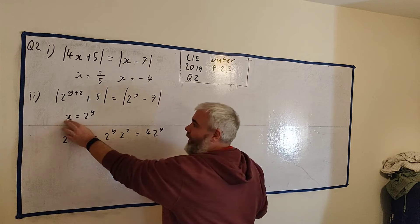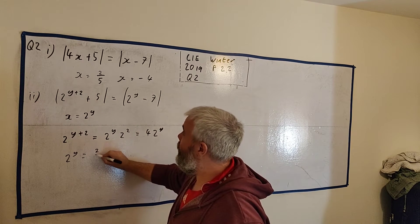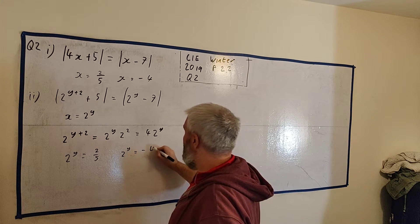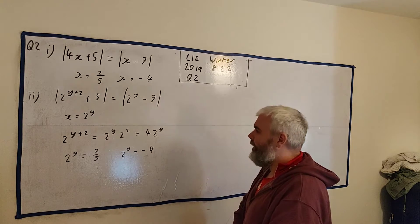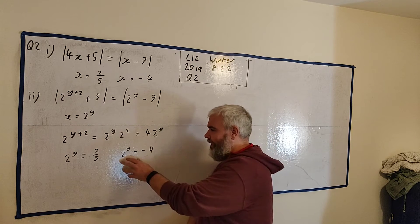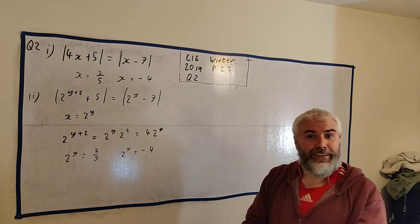But instead of getting an answer for x, we would actually get 2 to the power of y equals 2 over 5. Or we'd get 2 to the power of y equals minus 4. Now, this second one gives us a little problem in that 2 to the power of, well, there's nothing, 2 to the power of anything will never give us a minus 4. There's no number that will give us that.